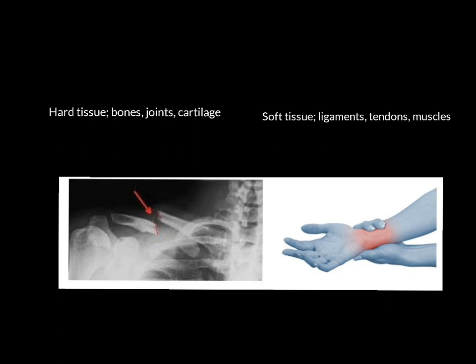We can categorize injuries as acute or chronic, and also as hard tissue or soft tissue. Hard tissue injuries are injuries to the bones, the joints, and also the cartilage — even though cartilage is quite springy, it's classified as hard tissue. For example, someone who's fractured their clavicle — their collarbone — would be an acute hard tissue injury, because it happened with an immediate impact and involves a bone.